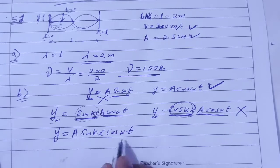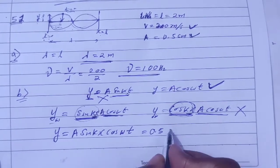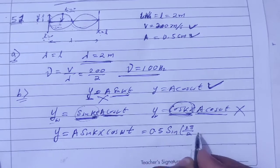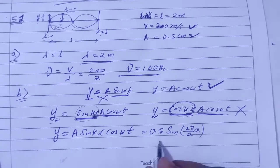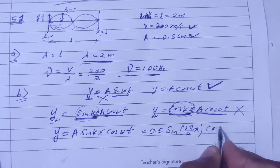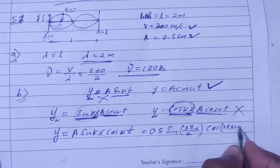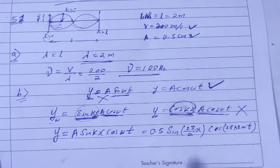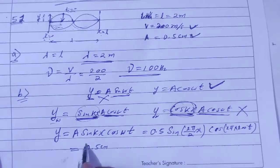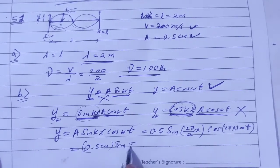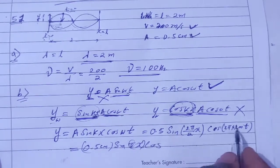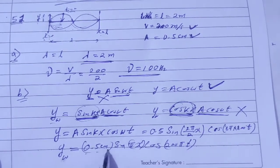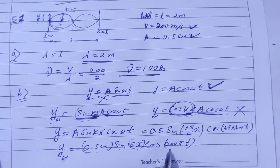Now substituting values: A equals 0.5 cm. k equals 2π divided by lambda equals 2π divided by 2 equals π. ω equals 2π times frequency equals 2π times 100 equals 200π. So the equation of the wave is: y equals 0.5 cm times sin(πx) times cos(200πt).